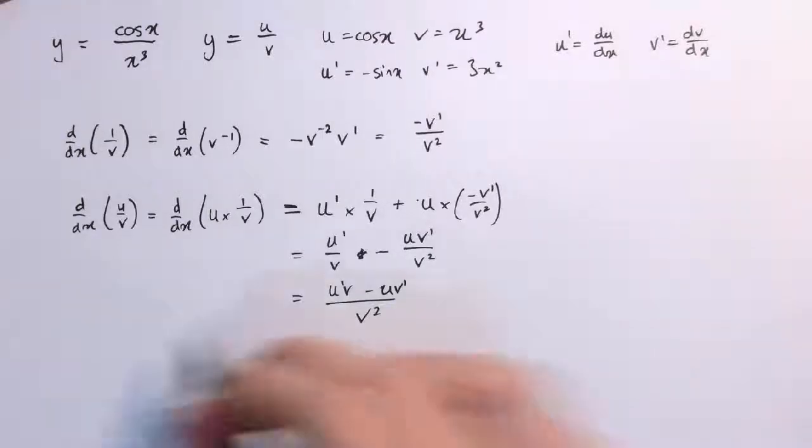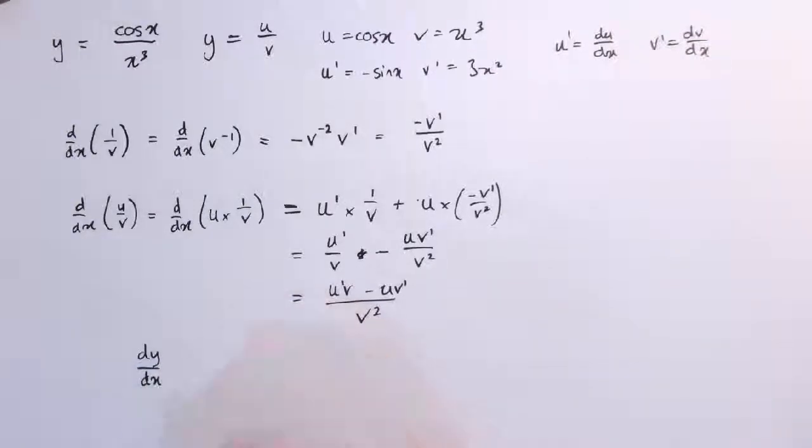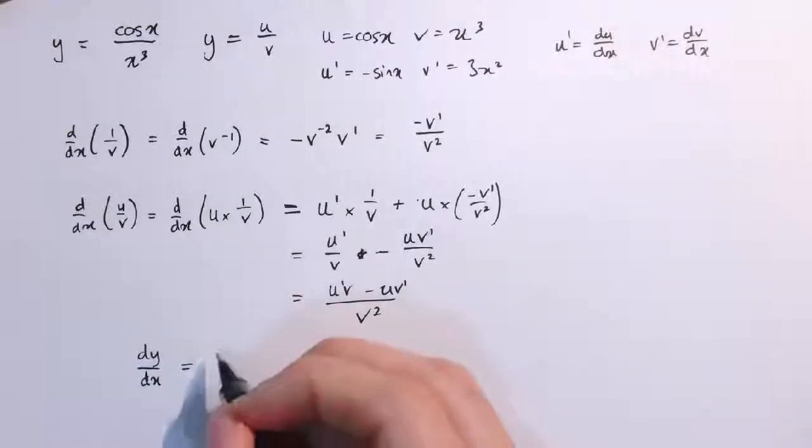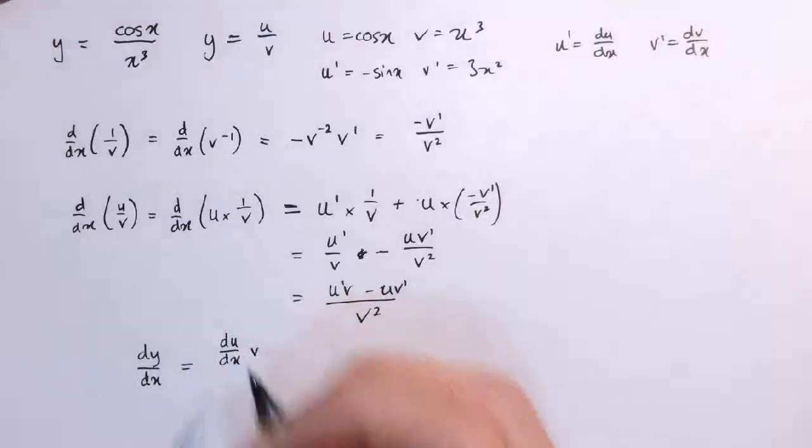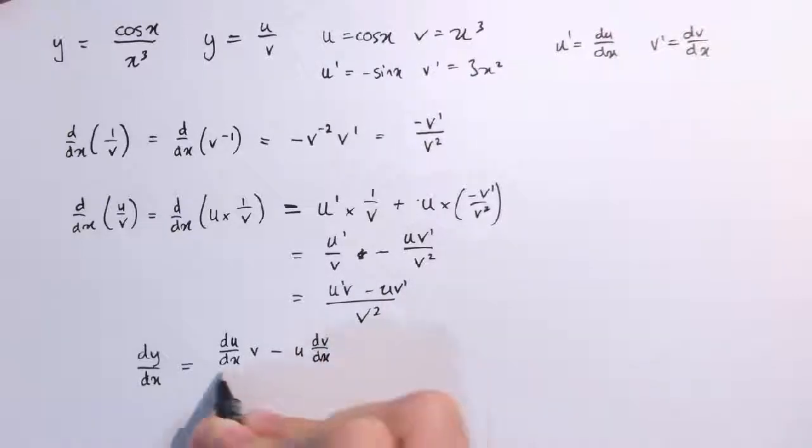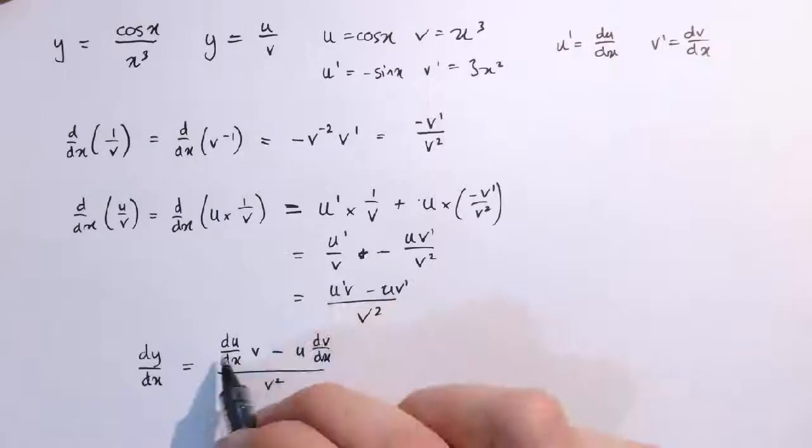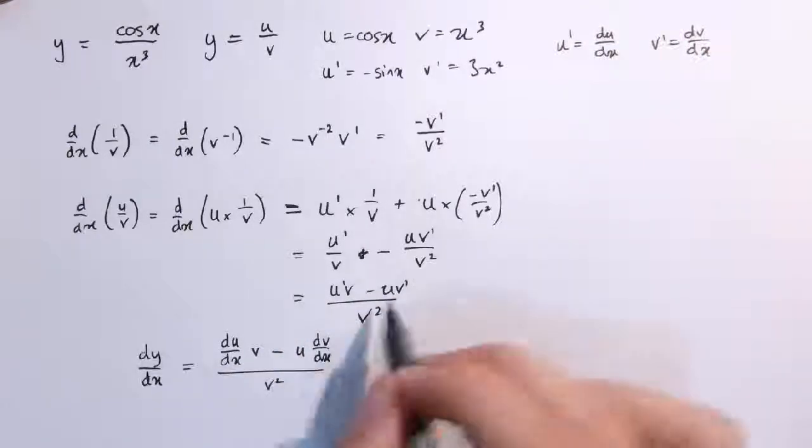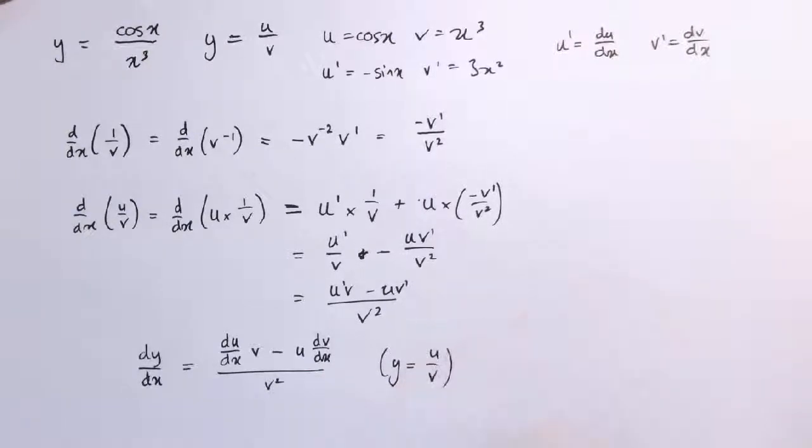And of course you could also write down the quotient rule as saying that dy by dx is equal to du by dx times v minus u times dv by dx all over v squared. That's another way of writing this with u dashed written as du by dx and v dashed written as dv by dx. Because sometimes you see each of these notations used.